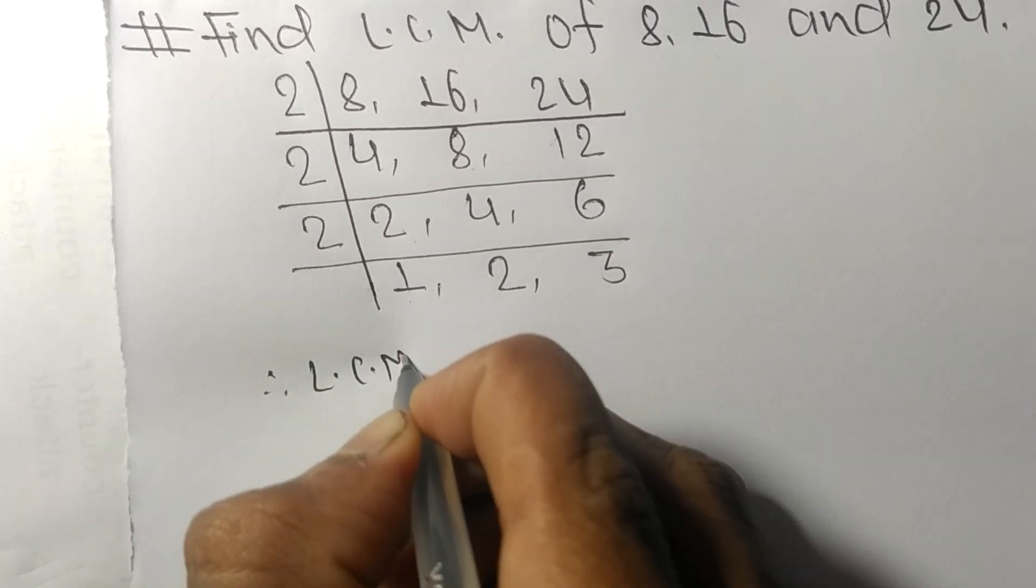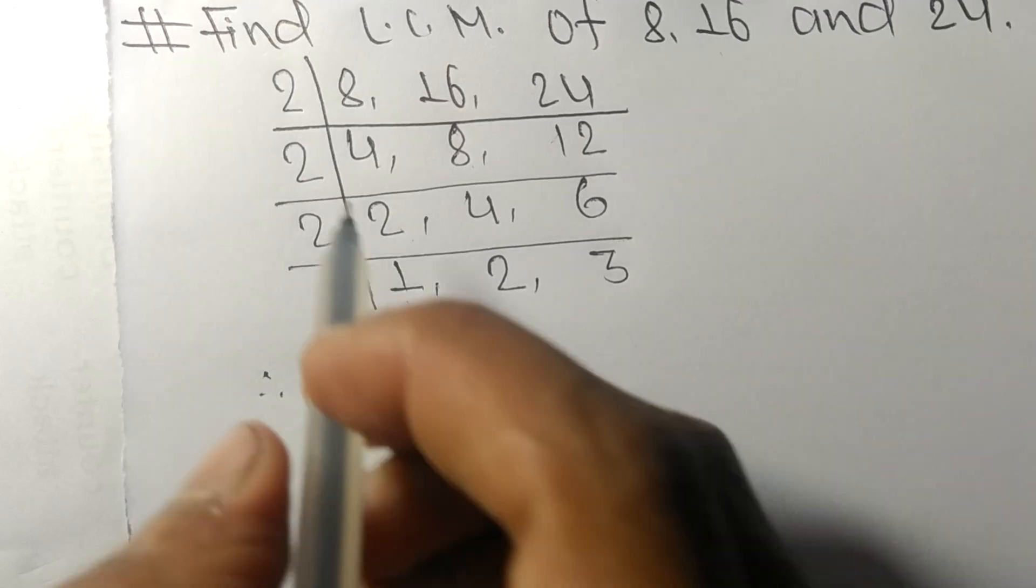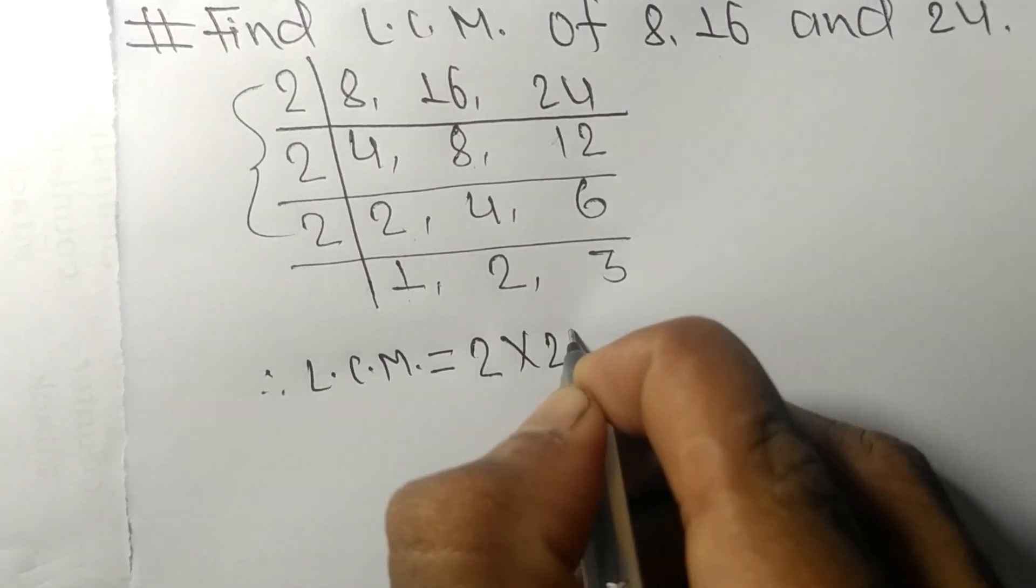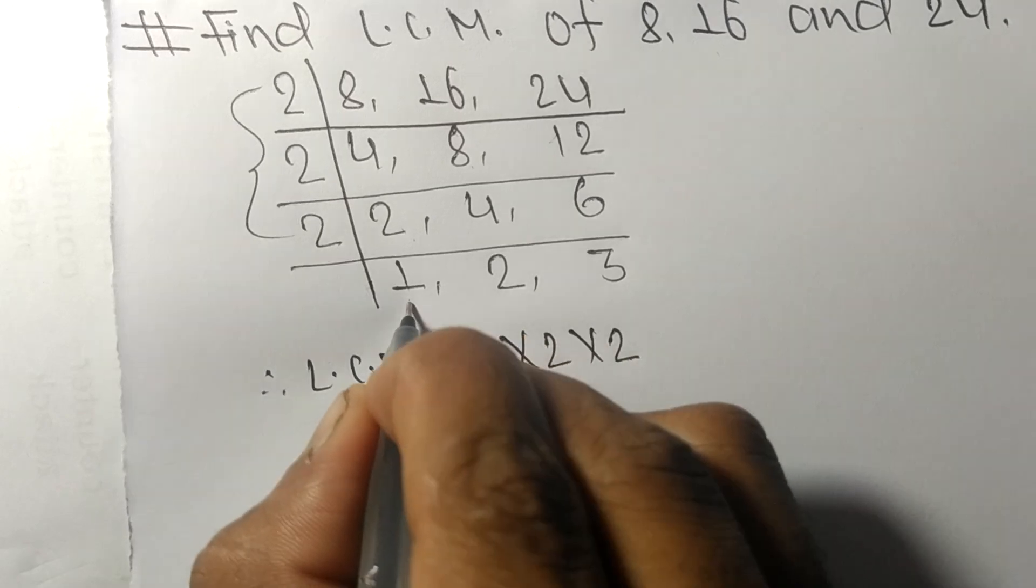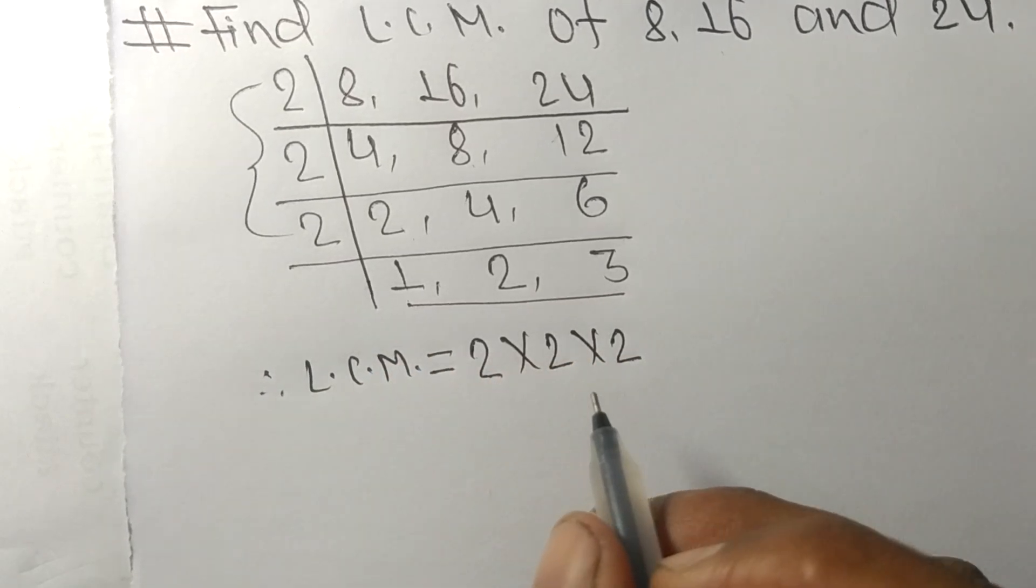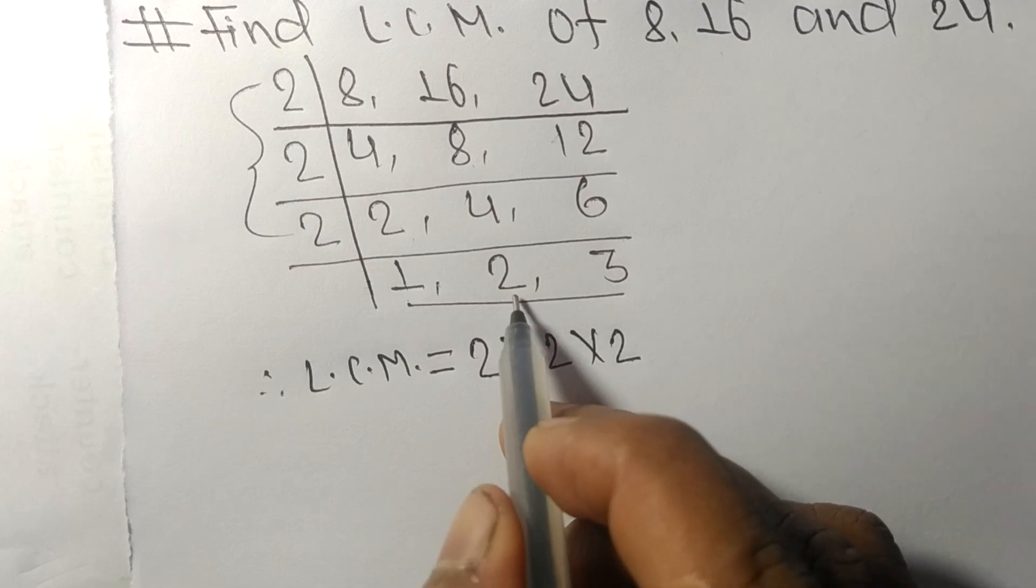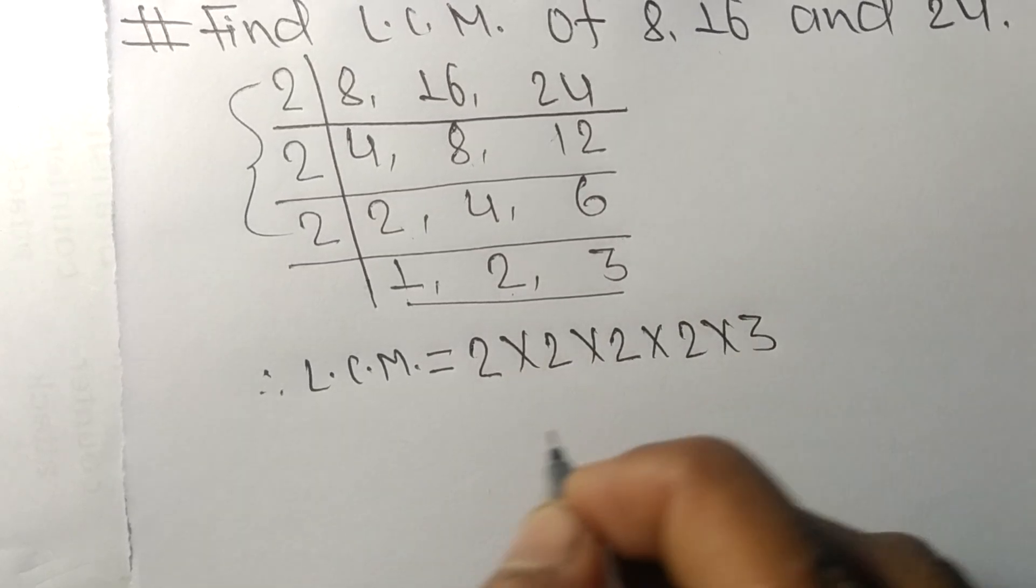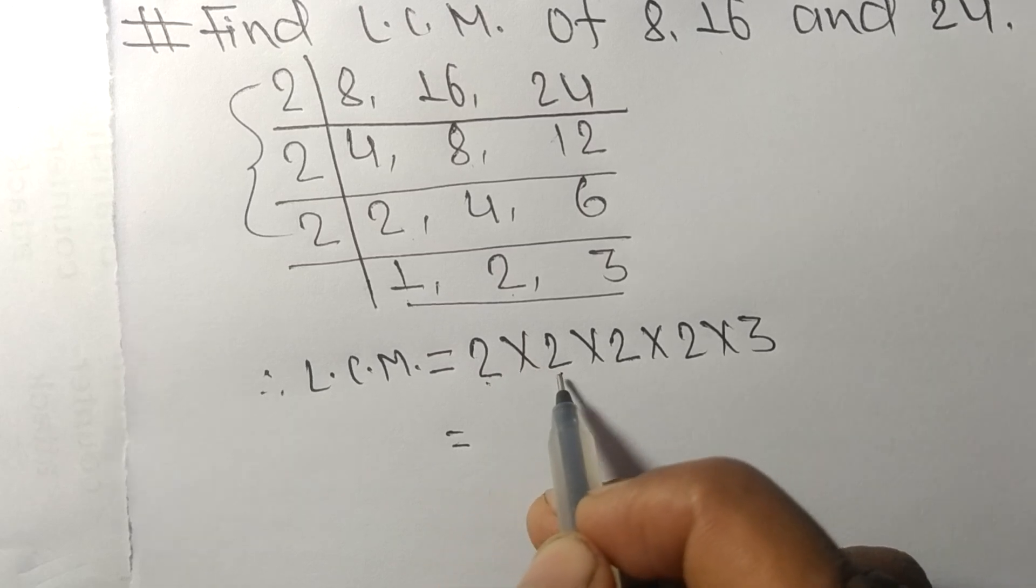Therefore its LCM is equal to, from this side it is 2 times 2 times 2. From this side we choose the numbers greater than 1, that is 2 and 3.